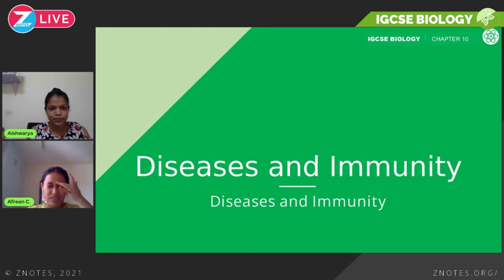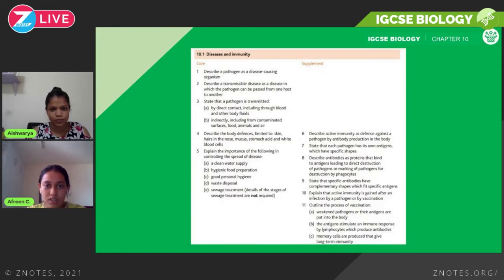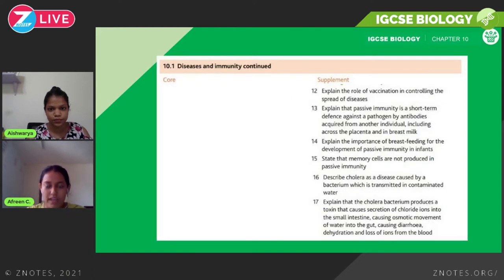Diseases and immunity doesn't have many sub-chapters — it's just one big chunk, section 10.1. The syllabus covers defining key terms and looking at processes like phagocytosis, vaccination, active and passive immunity, different ways of acquiring each, how we can prevent infections, and we'll also look in detail at one specific disease: cholera.